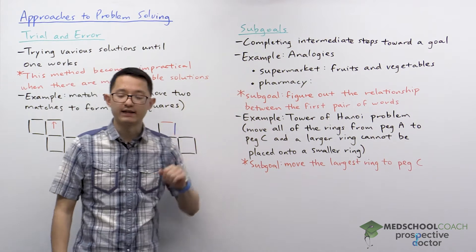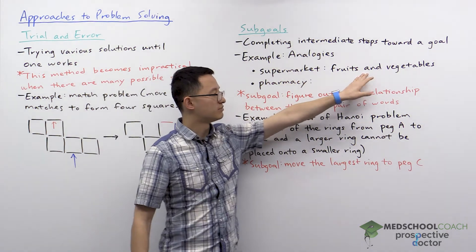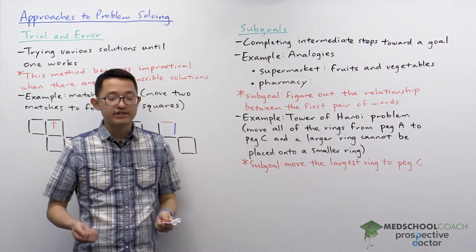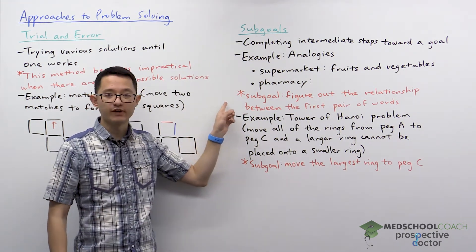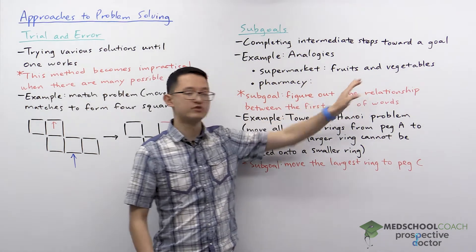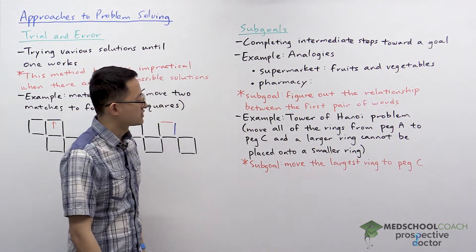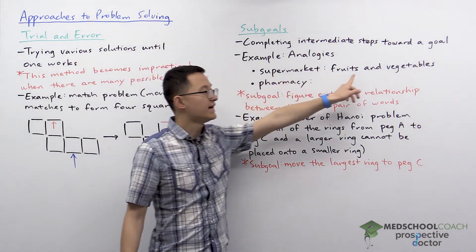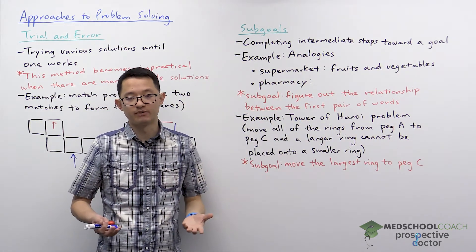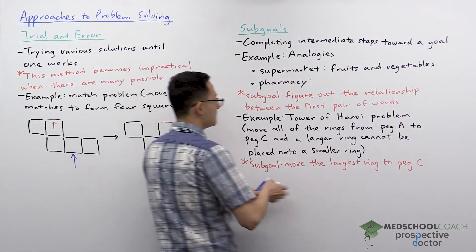As one example, we'll look at analogies. Supermarket is to fruits and vegetables as pharmacy is to what. For analogies, it's pretty straightforward. Your subgoal is to figure out the relationship between the first pair of words — we're going to look at supermarket and fruits and vegetables and figure out what the relationship is. A supermarket sells fruits and vegetables. Since we've now completed our subgoal, it makes it easier to complete the actual problem, so we're just looking for something that a pharmacy would sell, which would be medicine.